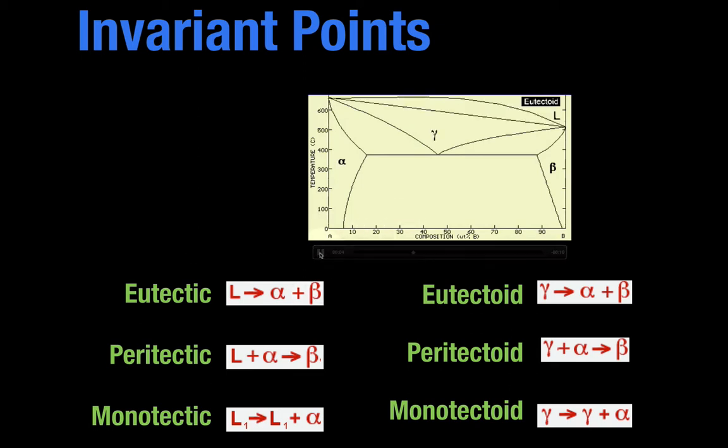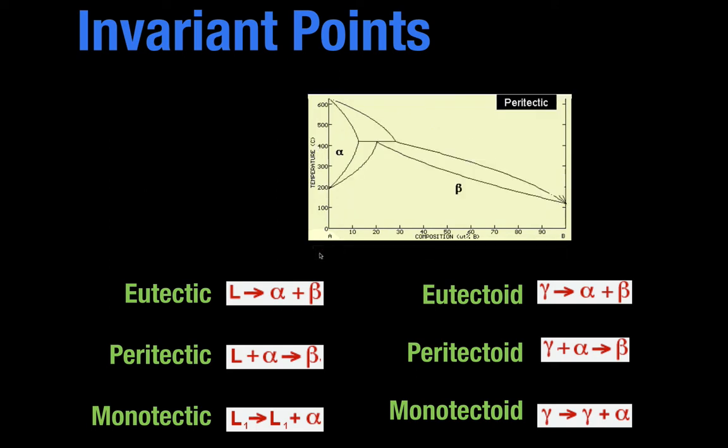Now if you go to something where you have a solid phase gamma, notice we just put a two-phase region there. There's liquid above. This looks very much like a eutectic, except this isn't liquid now, this is solid. So a gamma going to alpha plus beta, that's called a eutectoid. So the only difference between a eutectic and a eutectoid is that you have a liquid phase going to a two-phase solid, and in a eutectoid it's a solid phase going to a two-phase solid.